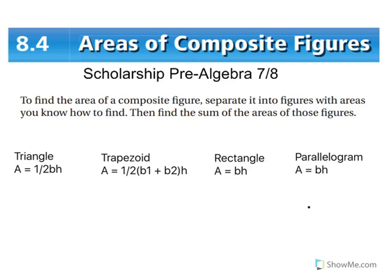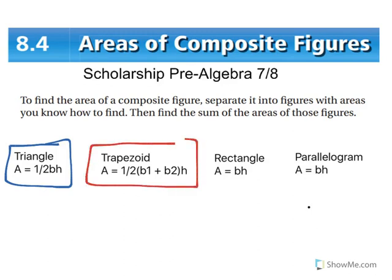Most of the figures that make up a composite figure will be a triangle, a trapezoid, a rectangle, a parallelogram, or typically a semicircle. We already know the formulas for circles and semicircles. For a triangle, the area is one-half base times height, which I'm sure you've learned. The trapezoid may be a little new for some of you.